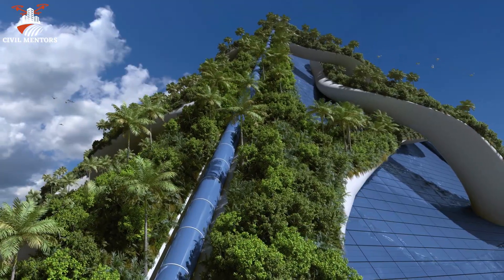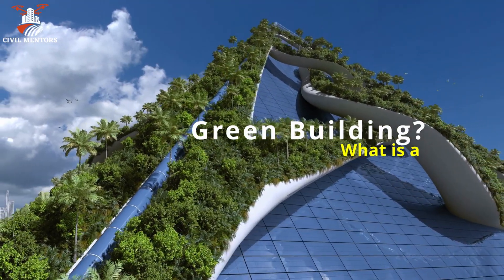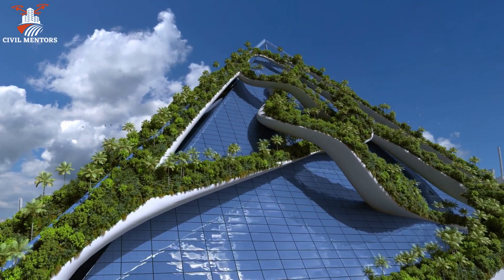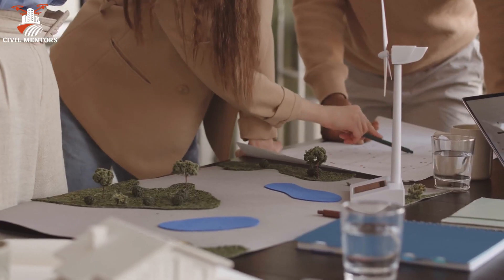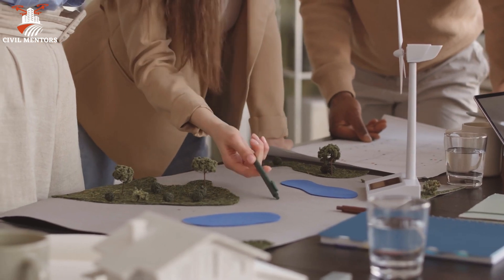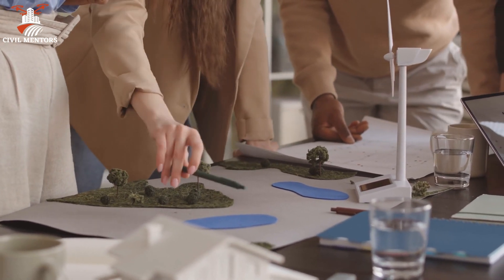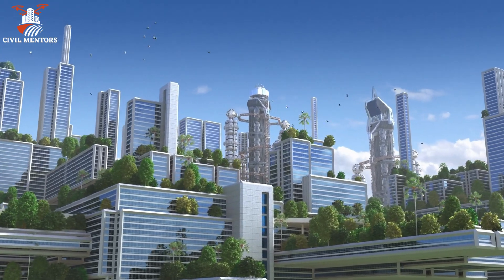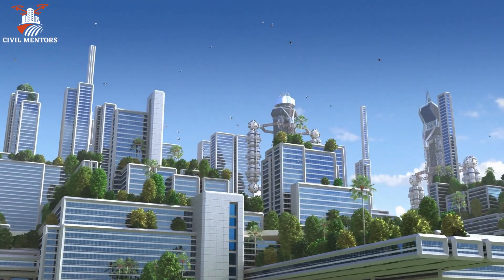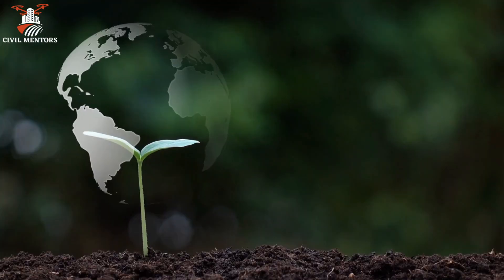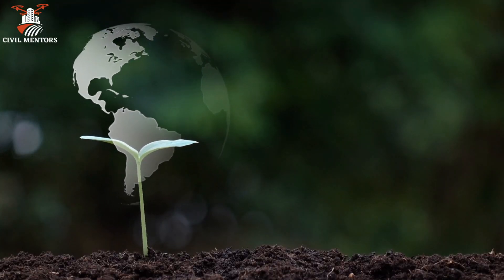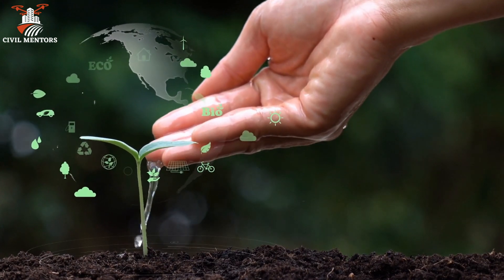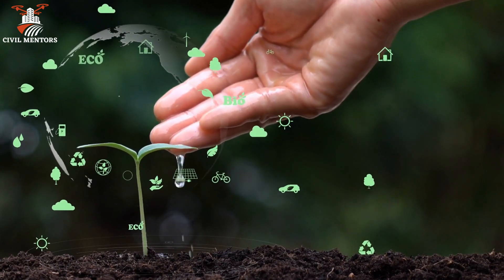Question 11: What is a green building and why is it important? A green building is a structure designed to minimize its environmental impact by using energy-efficient systems, sustainable materials, and environmentally friendly construction practices. Green buildings aim to reduce energy and water consumption, decrease waste generation, and improve indoor air quality. The importance of green buildings lies in their potential to mitigate climate change, conserve natural resources, and promote healthier living environments for occupants.